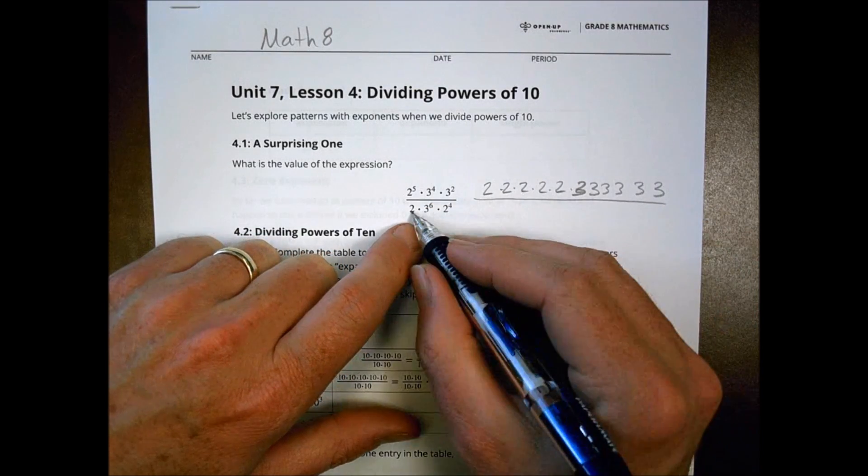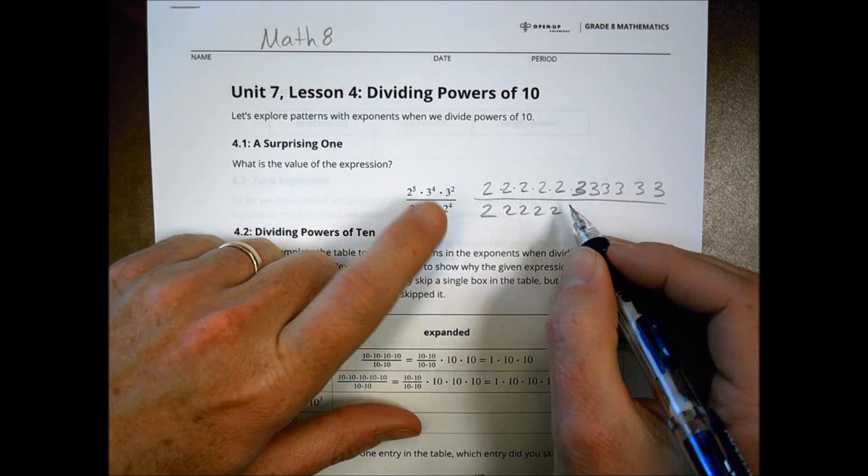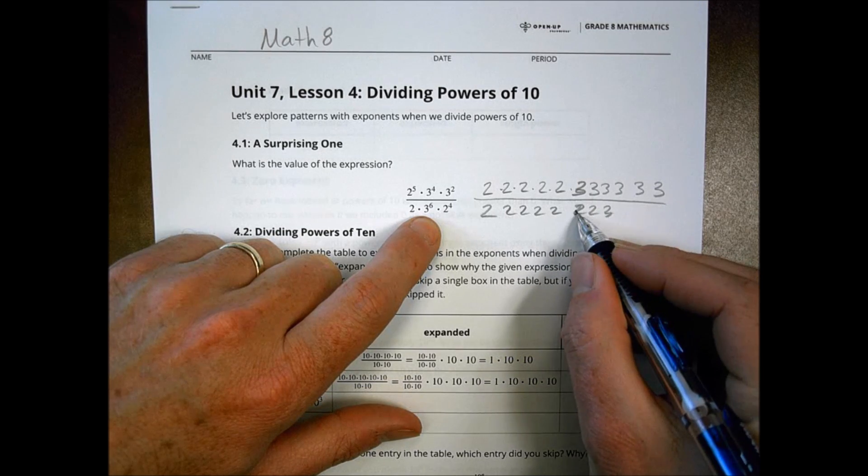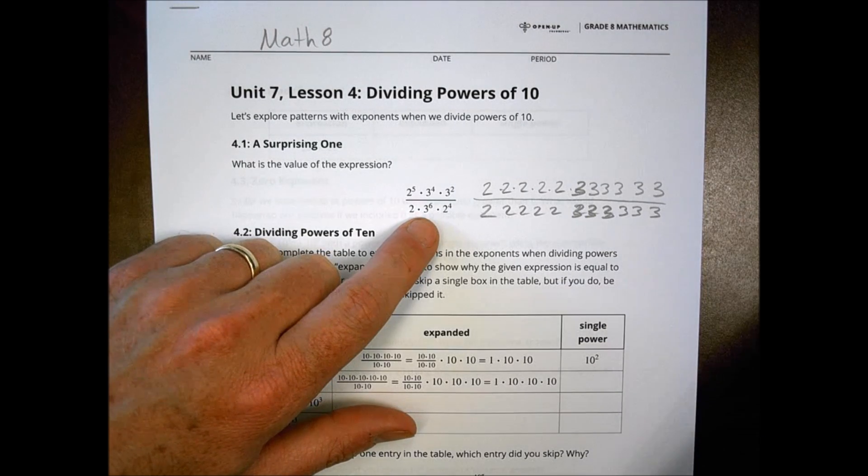So that's a long thing there. Here we have a two, we also have four more twos, one, two, three, four. And then six threes, one, two, three, four, five, six.